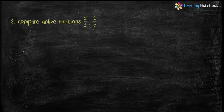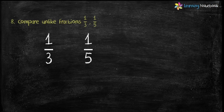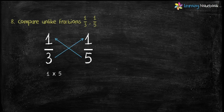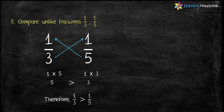Last question: compare unlike Fractions 1 by 3 and 1 by 5. Let's use cross multiplication technique. We will do 1 into 5 and 1 into 3. 1 into 5 equals 5 and 1 into 3 equals 3. Since 5 is greater than 3, therefore Fraction 1 by 3 is greater than Fraction 1 by 5.